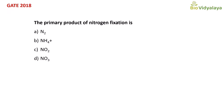This is the question from GATE 2018. The primary product of nitrogen fixation is: option A, N2 nitrogen; option B, NH4+ ammonium; option C, NO2; option D, NO3. During nitrogen fixation, nitrogen is converted to ammonia or ammonium. The correct answer is option B, ammonium NH4+.